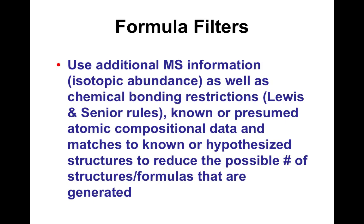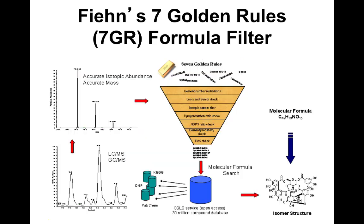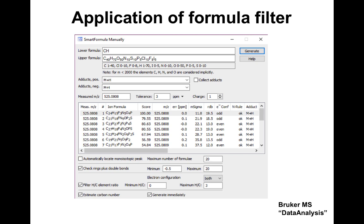Using bonding restrictions, atomic composition, and isotopic abundance together gives even better results. Oliver Fiehn's so-called seven golden rules allow you to use high-accuracy masses plus chemical knowledge — for example, you can't have a C120O1 compound, it can't physically bond — to narrow down reasonable formulas and feasible structures. These formula filters are available in commercial packages from Bruker, Thermo, and others.